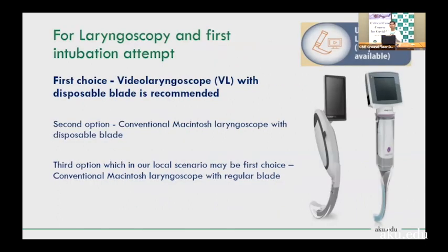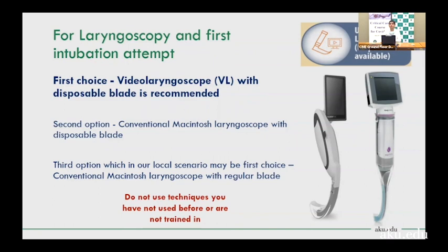For laryngoscopy and first intubation attempt: video laryngoscope with disposable blade is recommended for first pass success. If video laryngoscope is unavailable, use a conventional Macintosh laryngoscope with a disposable blade. If that is also unavailable, use a Macintosh laryngoscope with a regular blade. Use the technique you are trained in — do not use unfamiliar techniques.